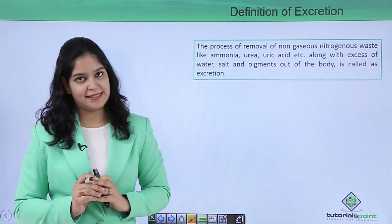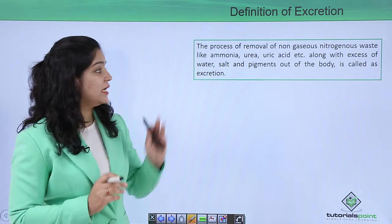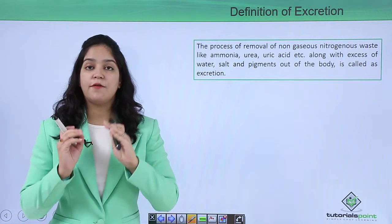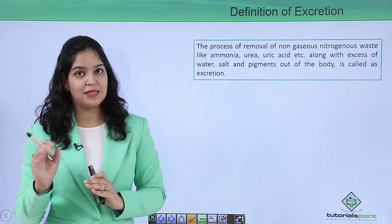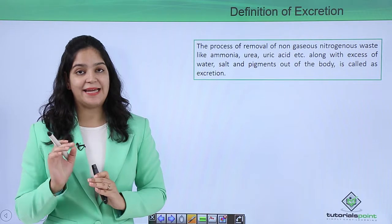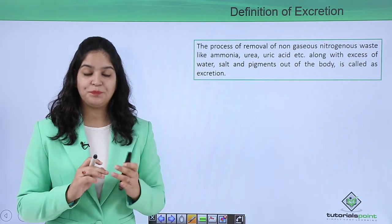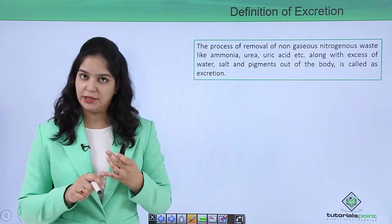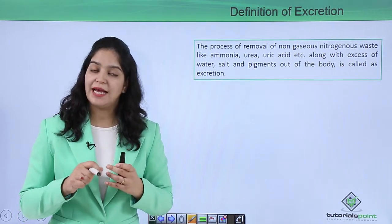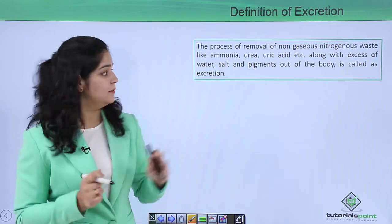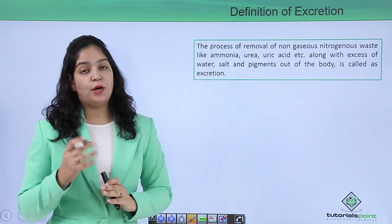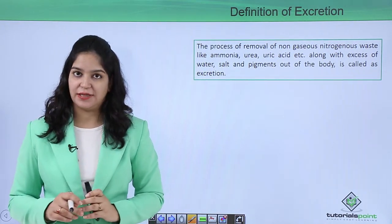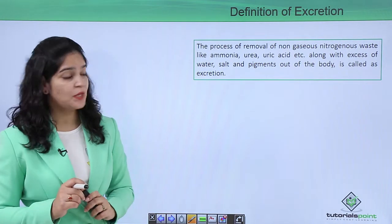So what is excretion? Excretion is the process of removal of non-gaseous waste like ammonia, urea, and uric acid, along with excess water, salts, and pigments out of the body. That is called excretion. Now, what is the need of excretion?